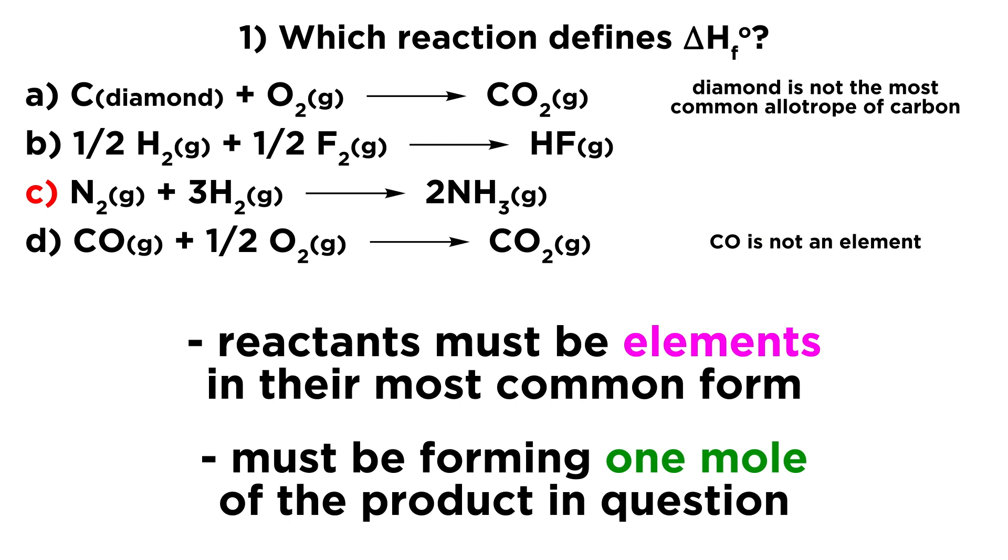Now looking at option C, this looks pretty good, but the only problem is that on the right we are forming two moles of ammonia. So if we cut all the coefficients in half, and we had one half N2 plus three halves H2 yields NH3, then that would be good. We'd be solid, but we don't. We have two moles of ammonia on the right, and so that doesn't work.